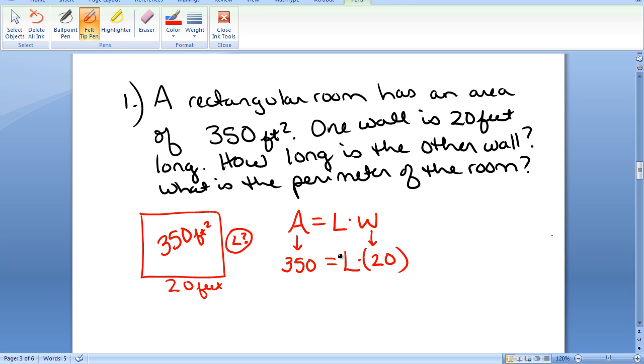To isolate L in this equation, to solve for L in this equation, I need to get rid of that 20 by dividing both sides by 20. So now on the right side I am left with just L, and on the right side I have 350 divided by 20, which is 17.5. So the length of the other wall is 17.5 feet.